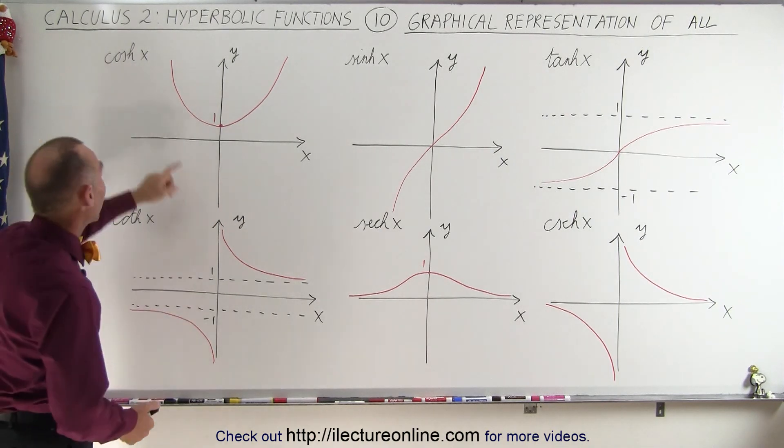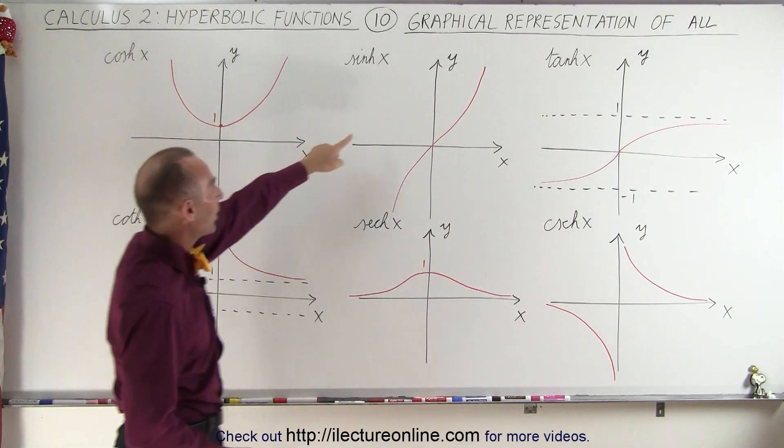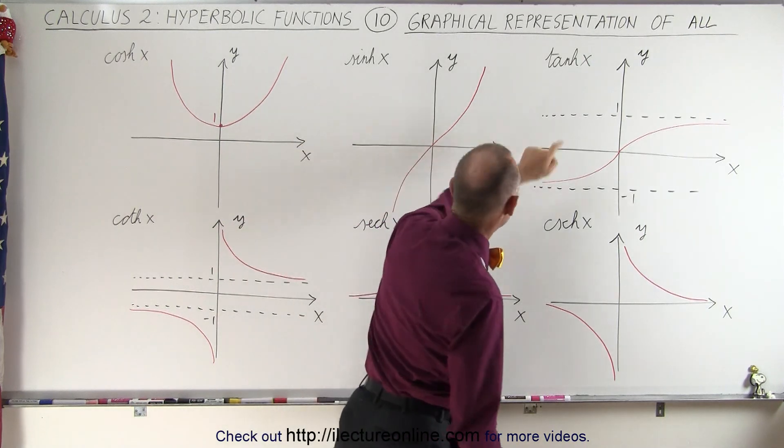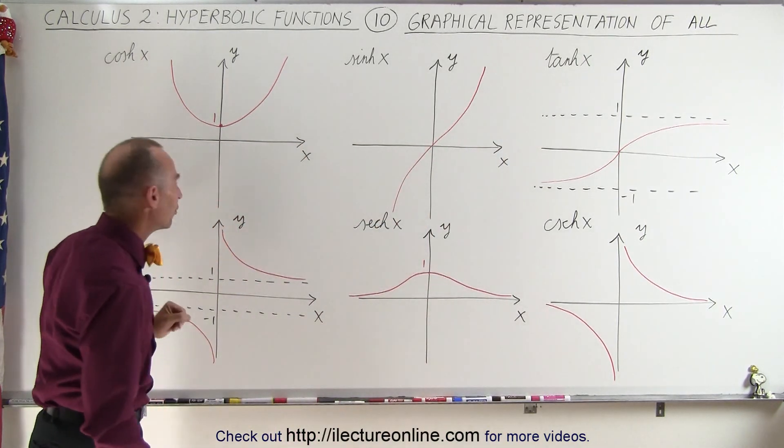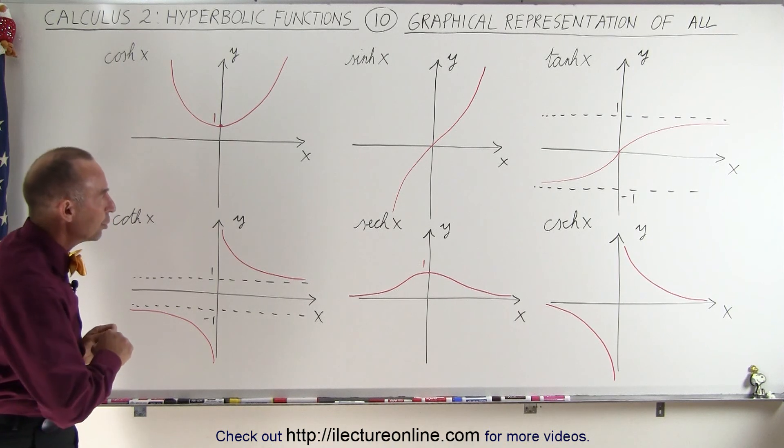We've already been introduced to the hyperbolic cosine, the hyperbolic sine, the hyperbolic tangent, and the hyperbolic cotangent, and we've seen why the graphs look the way they do.